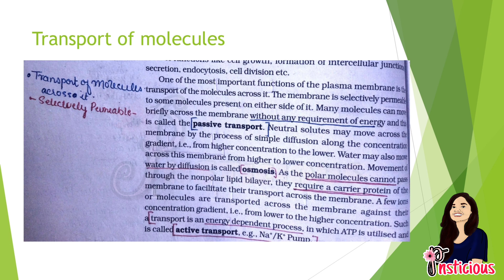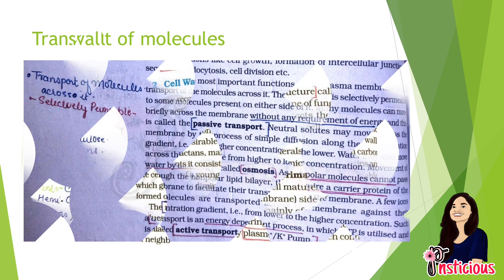Coming to page 132 — one of the most important functions of the plasma membrane is the transport of molecules across it. Many molecules can move without any requirement of energy; this is called passive transport. Movement of water by diffusion is known as osmosis. Polar molecules cannot pass directly and require a carrier protein to facilitate their transportation. Active transport is energy dependent and utilizes ATP, for example in the sodium-potassium pump.